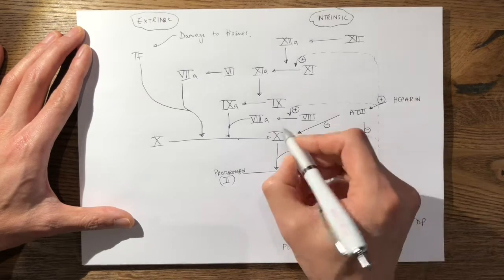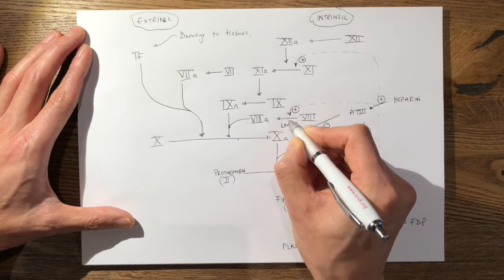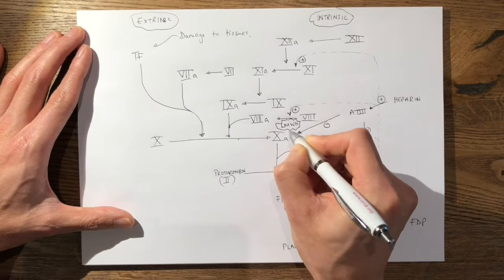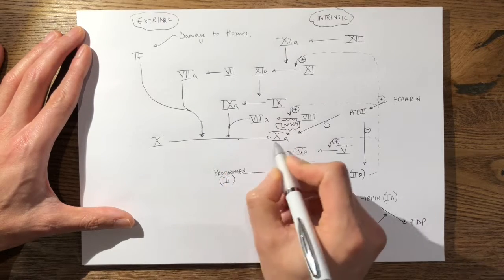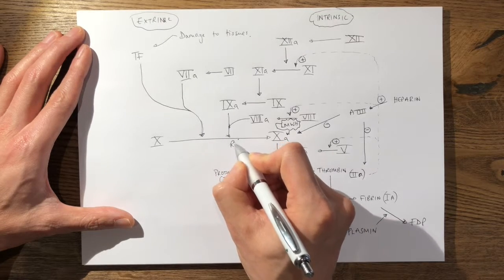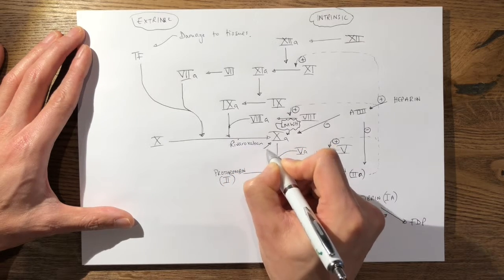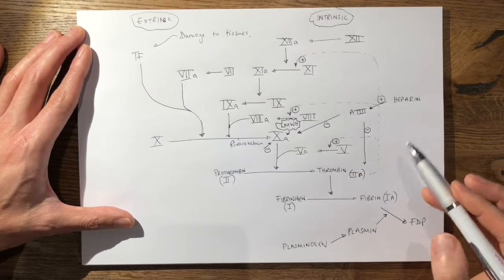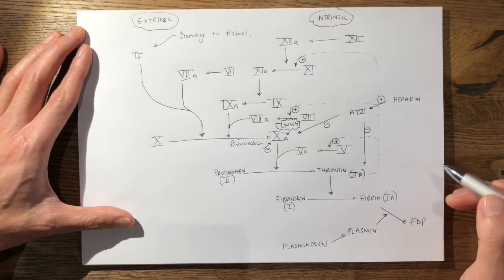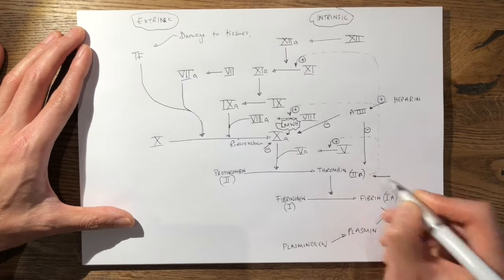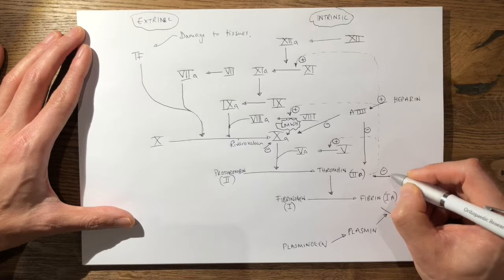Low molecular weight heparin is a direct inhibitor of factor 10a and works at that point in the cascade. Another direct inhibitor of factor 10a, which is also commonly used, is rivaroxaban — that works here as well. Dabigatran is a direct inhibitor of thrombin, and dabigatran, which is licensed by the Department of Health, acts at the thrombin step.